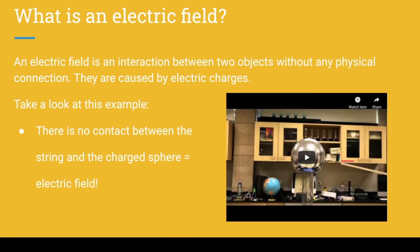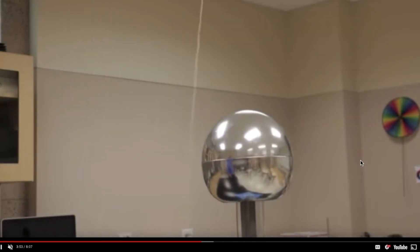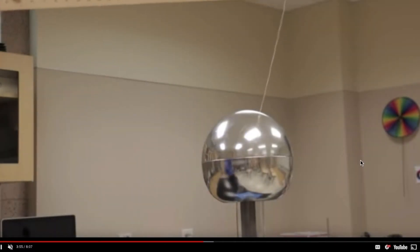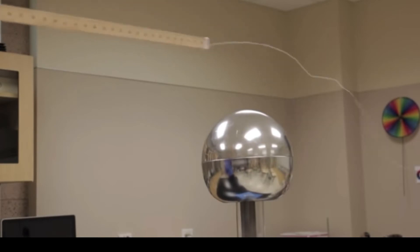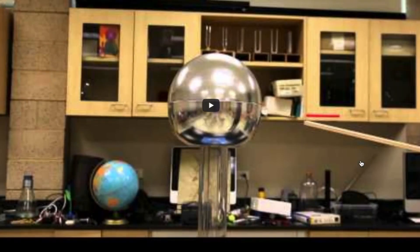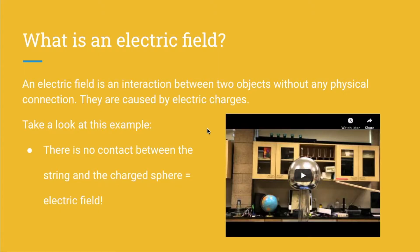Let's talk about what exactly is an electric field. An electric field is an interaction between two objects without any physical connection. Electric fields are caused by electric charges. To visualize this, let's watch a short clip. The big metal thing in the center is a charged sphere, and that is a piece of string attached to the ruler. You can see that the string is not coming even close to the charged sphere, and kind of keeping away from it. So, there's no contact between the string and the charged sphere, however there definitely still is interaction. And this is what an electric field is.